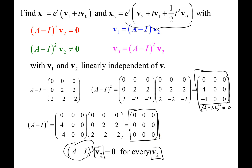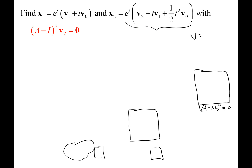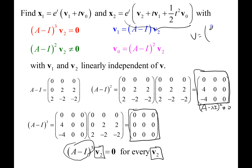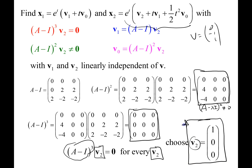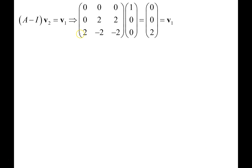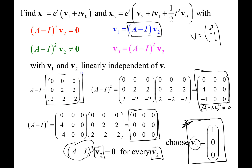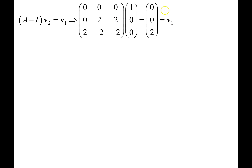We want to pick v2 so that it is linearly independent from v = (0, −1, 1). Typically we pick simple vectors with 1s and 0s — like standard basis vectors — to make sure it isn't a linear combination of the other vector. Once we have v2, we find v1 by computing (A − I) times v2, which amounts to picking off the first column. Double-checking confirms that v1 is not a multiple of the original eigenvector.